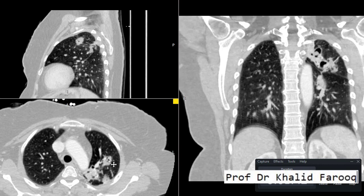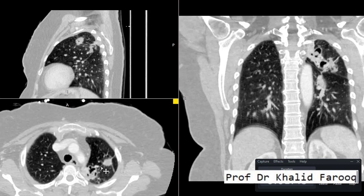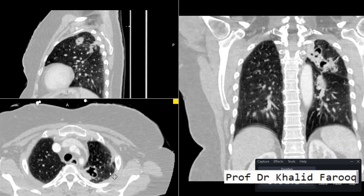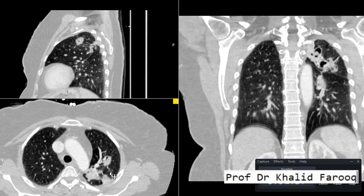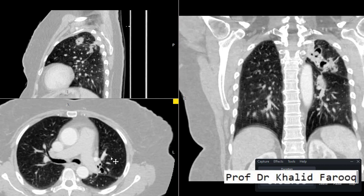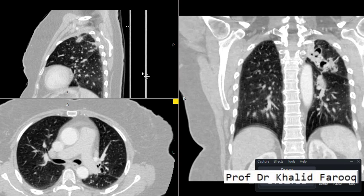Another area of developing cavity is noted in this region, with fibrotic changes around it. There is another cavity with an irregular nodular wall. There are also a few lymph nodes in the anterior mediastinum. The diaphragmatic contours and costophrenic angles are unremarkable.